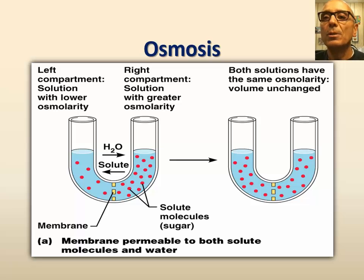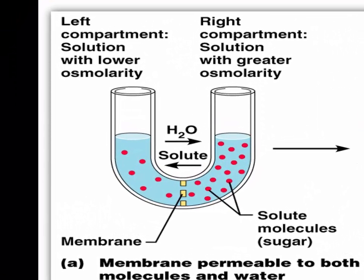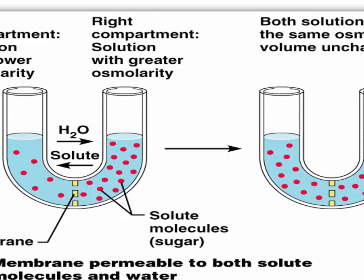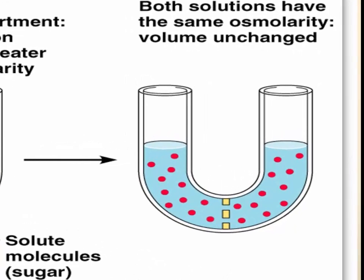Osmosis is a special type of diffusion that refers to the diffusion of water molecules across a selectively permeable membrane. In the first scenario, two different solutions are separated by a membrane in a U-shaped tube. The membrane is permeable to both the solvent molecules — meaning water — as well as the solute molecules, in this case glucose. The solution on the left-hand side has a lower osmolarity than the one on the right. Osmolarity refers to the total concentration of solute particles in a solution. With time, both solute and solvent molecules diffuse along their concentration gradient, resulting in equilibrium between the two sides of the tube.